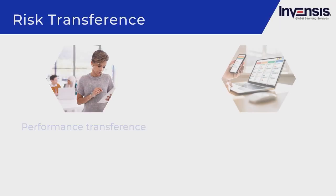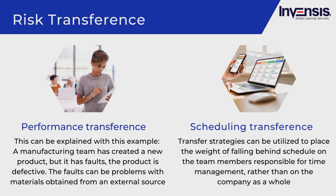An example of performance transference: if a manufacturing team has created a new product with faults, those faults may not be due solely to manufacturing concerns but rather to problems with materials from an external source. The company can pass the consequences to the outside vendor responsible for delivering the product materials by demanding the vendor cover the expenses associated with product faults.